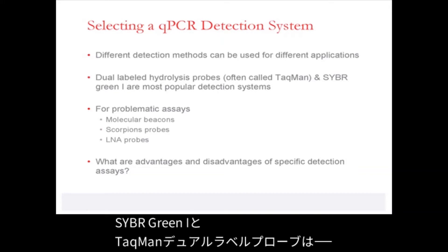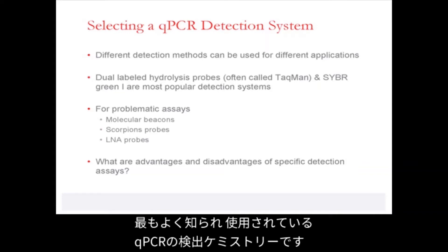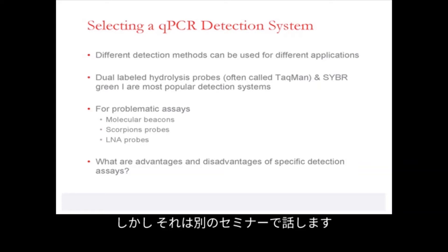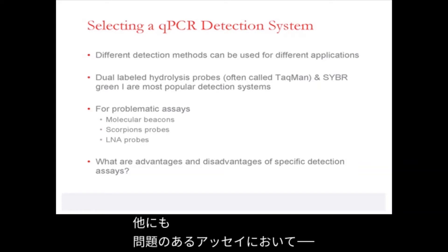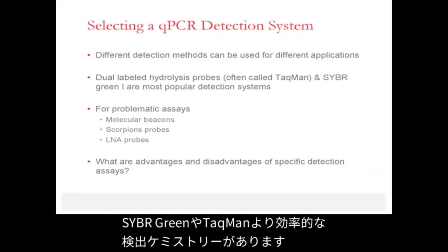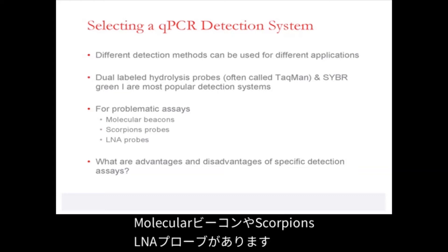SYBR Green 1 and TaqMan or dual-label probes are the most well known and used qPCR detection chemistries. However, there are others I will discuss in another talk — the alternative detection chemistries and situations where they may be more efficient than SYBR Green and TaqMan in problematic assays. These are molecular beacons, scorpions, and LNA probe chemistries.